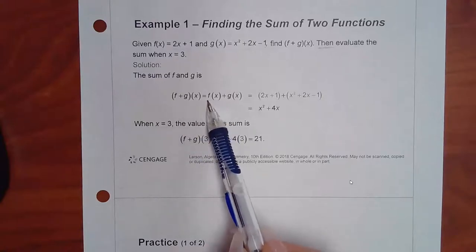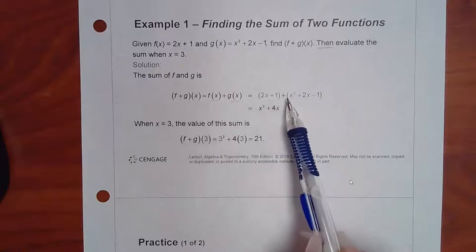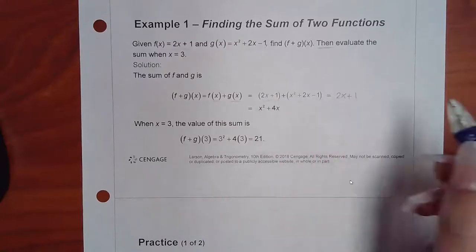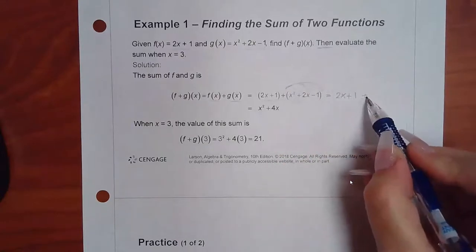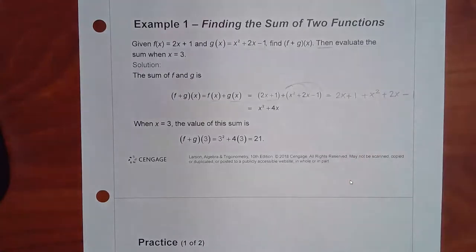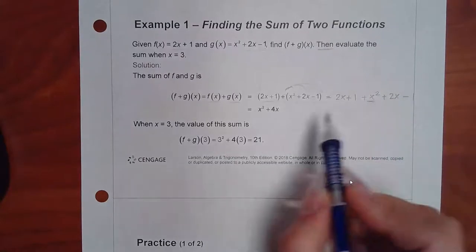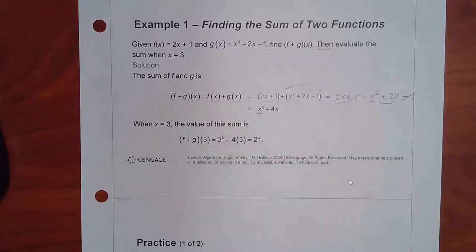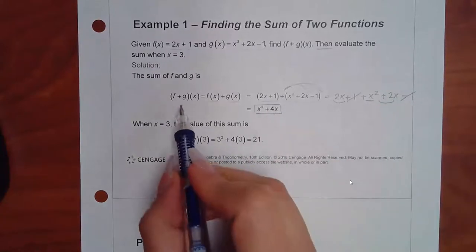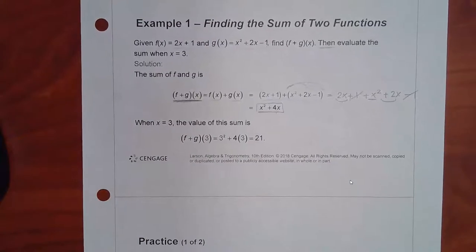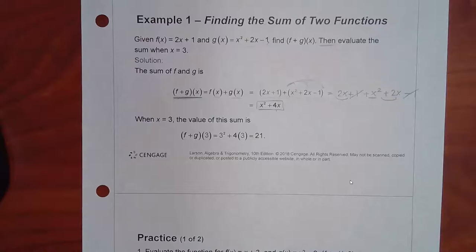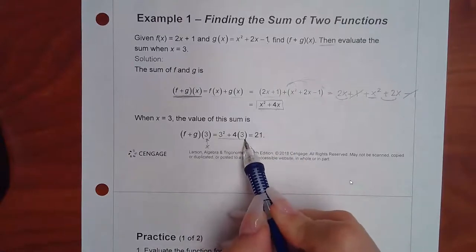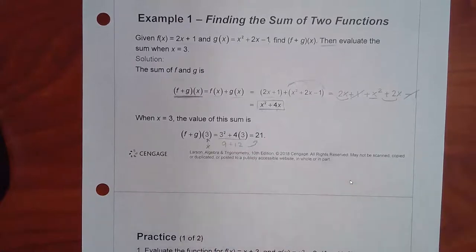To do f + g, that means f(x) plus g(x). They plugged in the f function, put the plus sign, and plugged in the g function. There's really no need for parentheses on the first one because there's no exponent and no coefficient. Combining like terms: one x², then 2x + 2x gives 4x, and positive 1 minus 1 cancels out. Plugging in x = 3 gives 9 + 12 = 21.